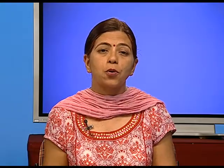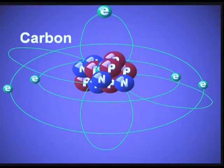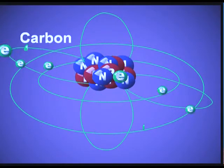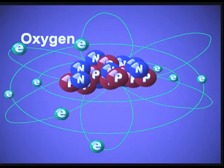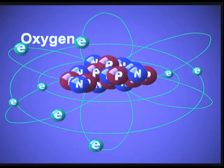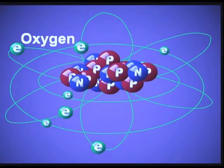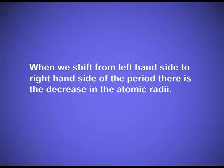Carbon has atomic number 6, with six protons and six electrons. One more proton is added to the nucleus and the effective nuclear charge increases, but the electron goes to the same 2p shell. So as we proceed towards the right-hand side of the period, we see that effective nuclear charge is increasing, but electrons are being added to the same shell. For nitrogen, oxygen, and fluorine, the shell remains the same but the nuclear power keeps increasing. Therefore, the nucleus attracts the valence shell with more power, the electron cloud decreases in size, and atomic radius decreases as we shift from the left to the right-hand side of the period.